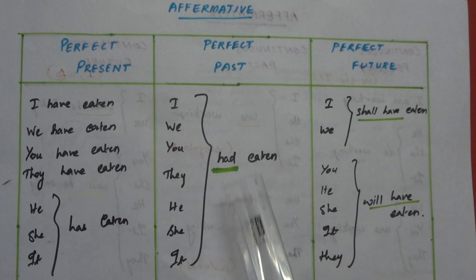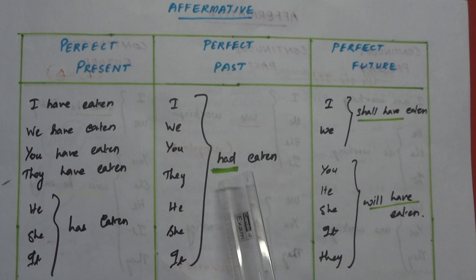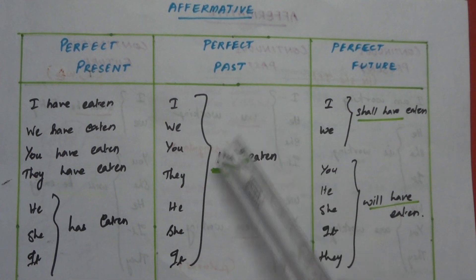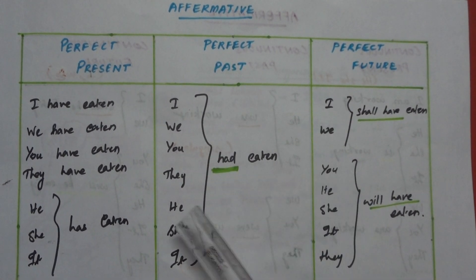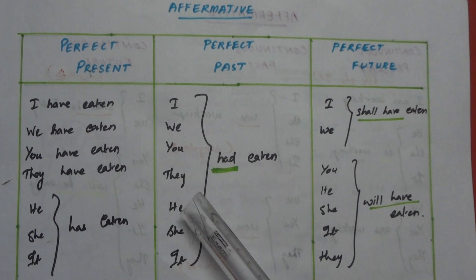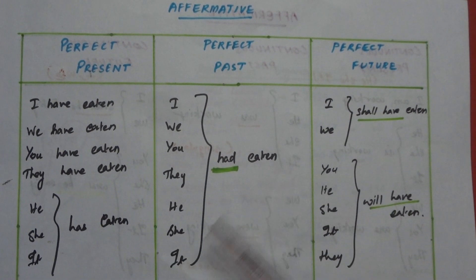So we have to change the past. I had eaten, we had eaten, you had eaten, they had eaten, he had eaten, she had eaten, it had eaten.